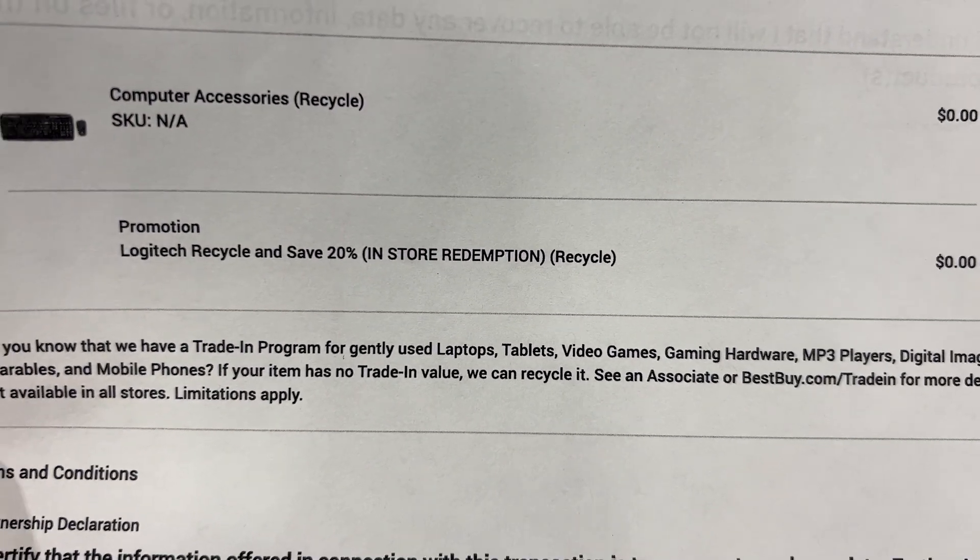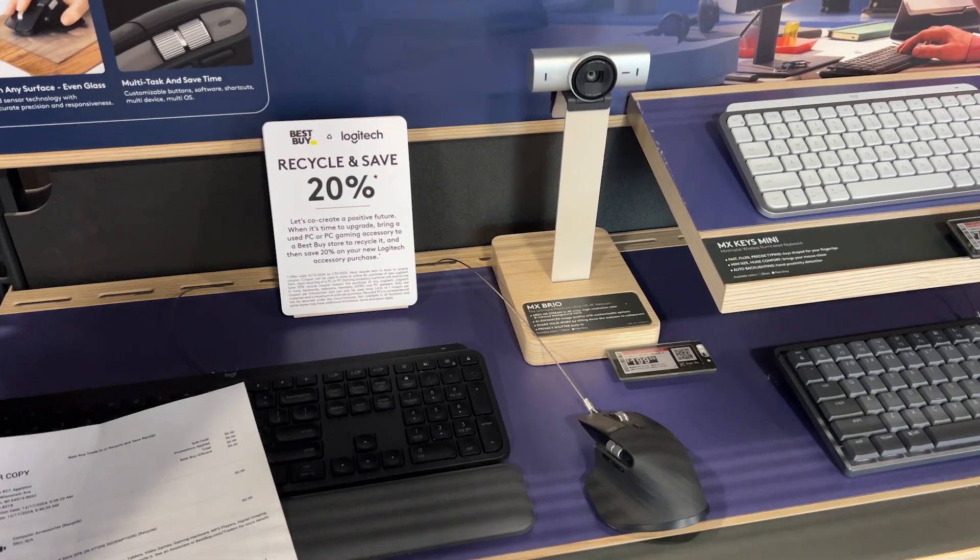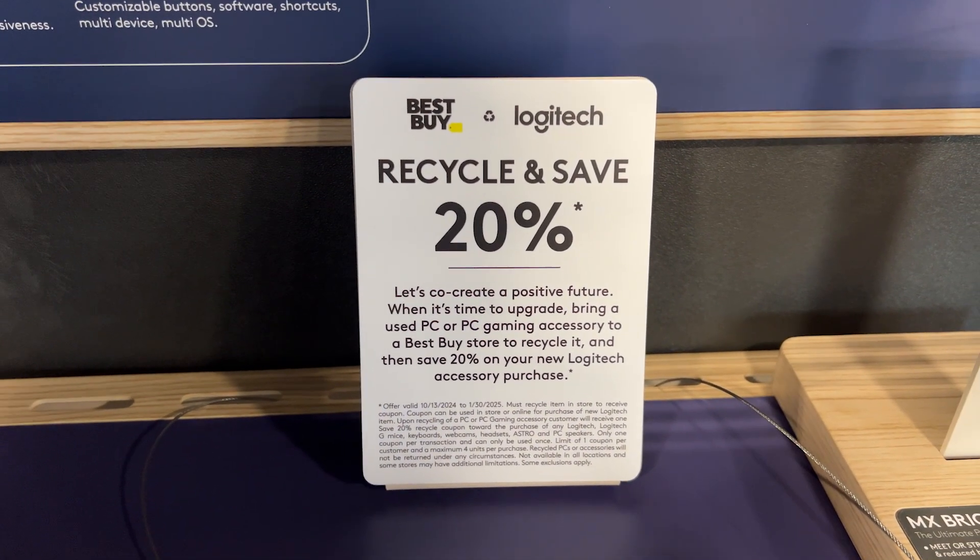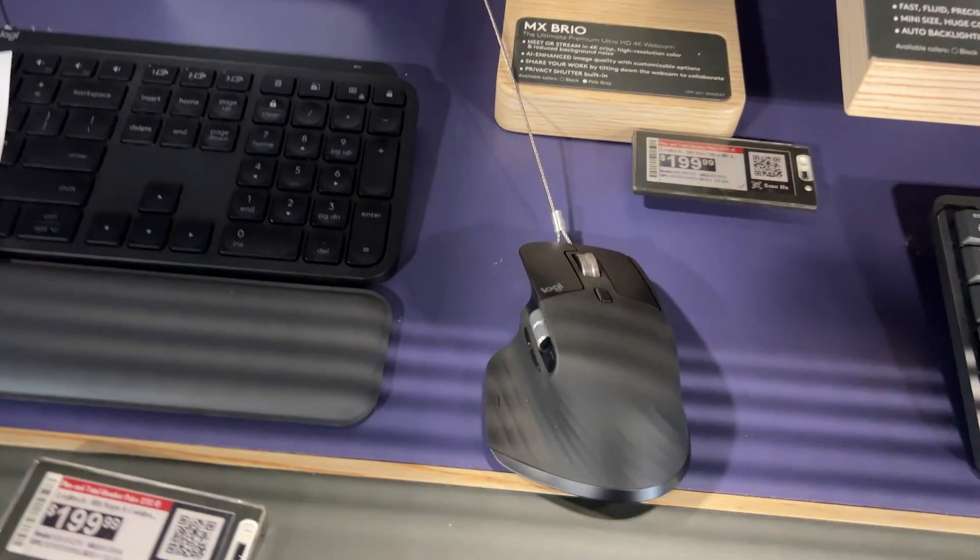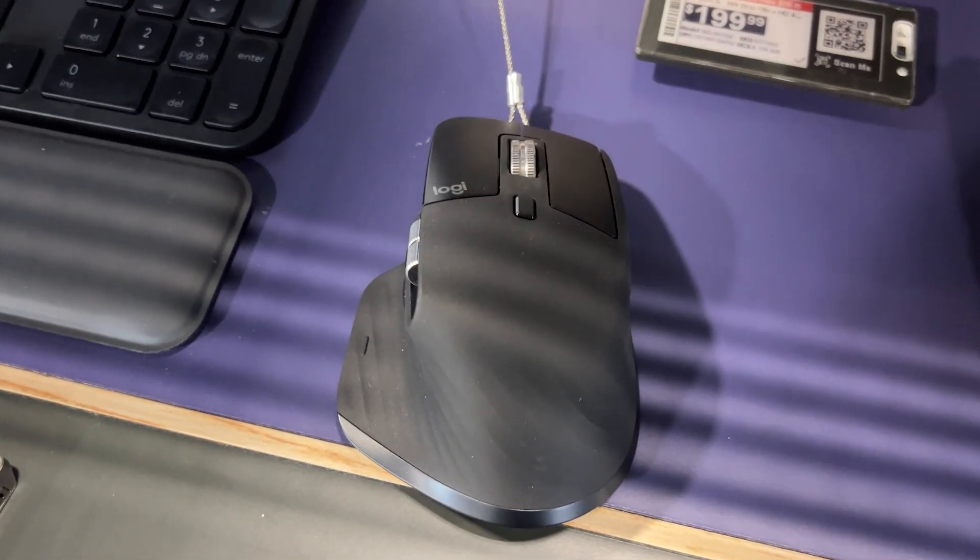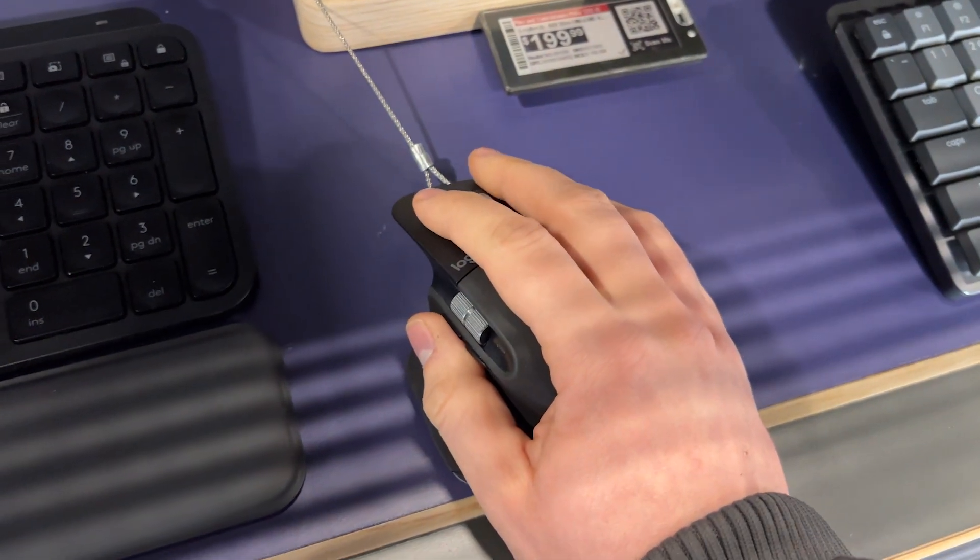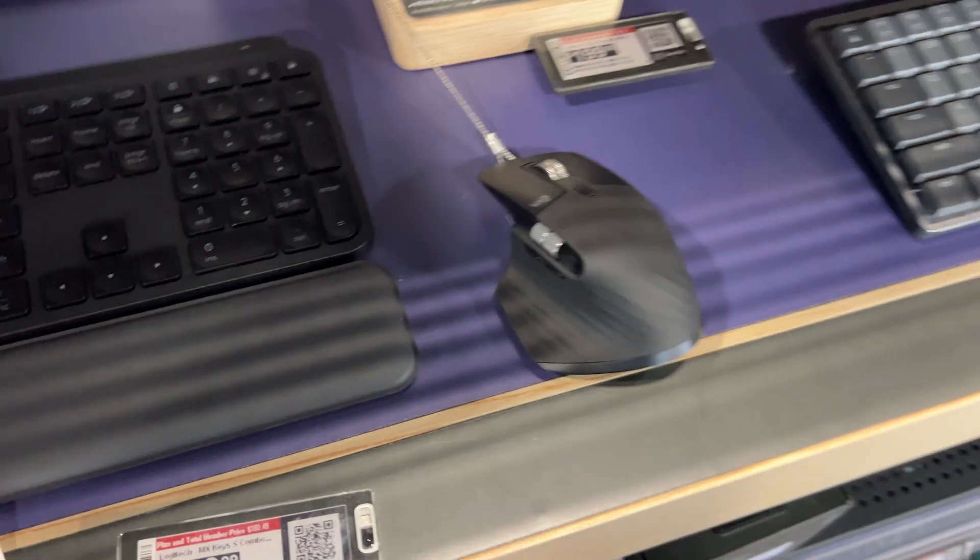And then just go find any Logitech product that you're looking for. In my case, I wanted a wireless mouse. Ended up picking the Logitech MX Master 3S. I had the original MX Master and it eventually died on me, so I figured I'd check out the new one. I ended up picking it up.